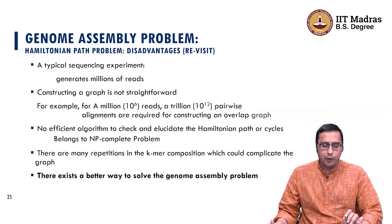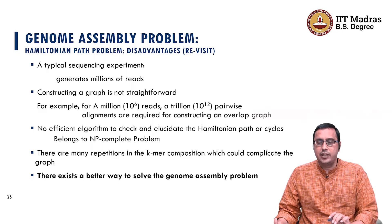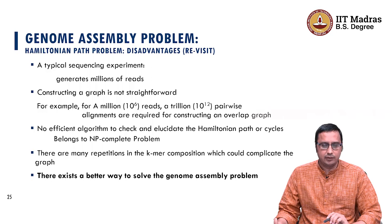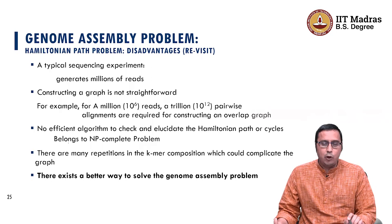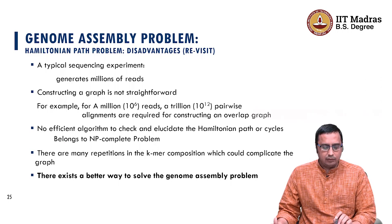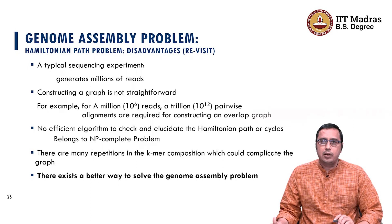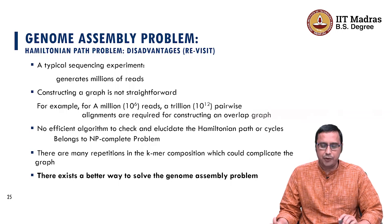Another problem with the Hamiltonian path problem is finding an efficient algorithm to identify Hamiltonian paths or cycles. They belong to the NP-complete problem class, which is difficult to solve in an efficient manner. Can we do better than the Hamiltonian path problem? That is the question we posed in the last lecture, and we will continue with that today.